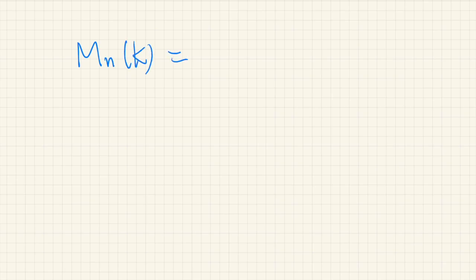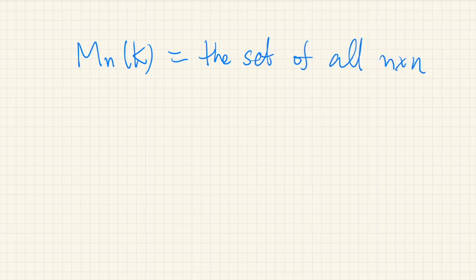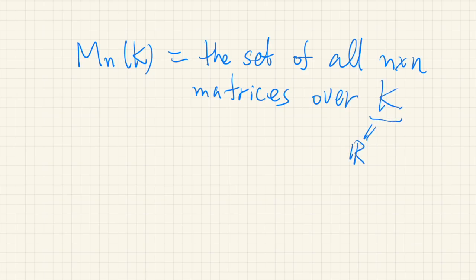From now on in this video, we focus on square matrices — that is, n-by-n matrices, where there are as many rows as there are columns. The set of such matrices we write as M_n(K), the set of all n-by-n matrices — square matrices — over K, where K is a field, usually the set of real numbers, sometimes complex numbers, or something else.